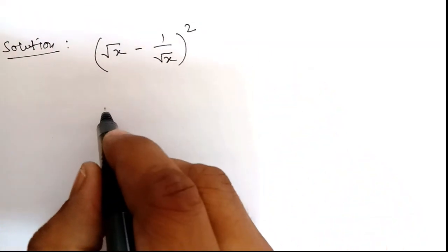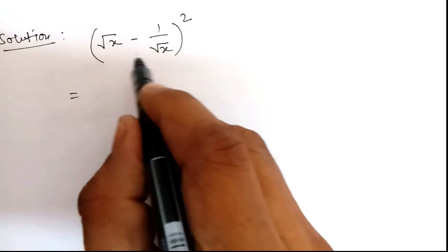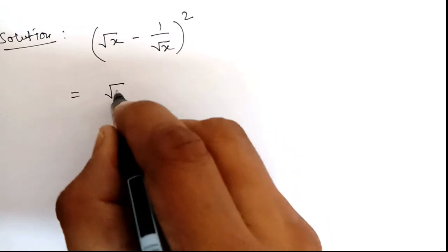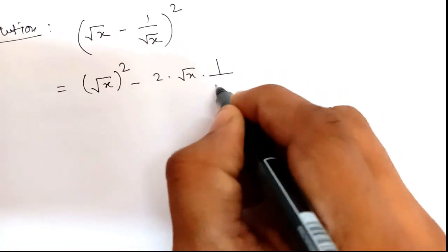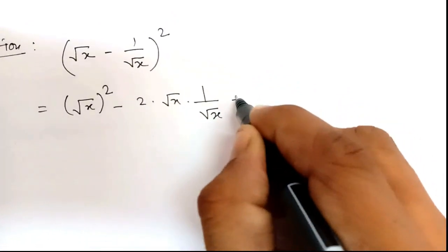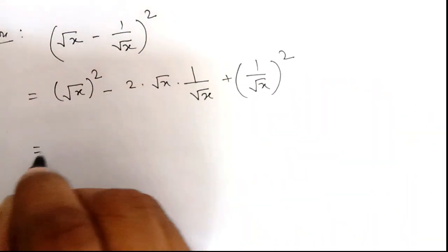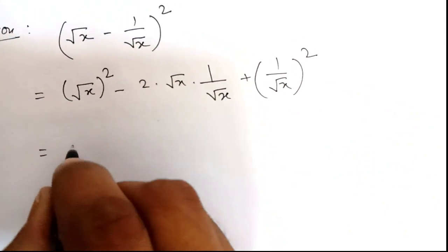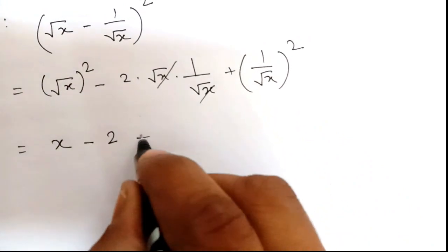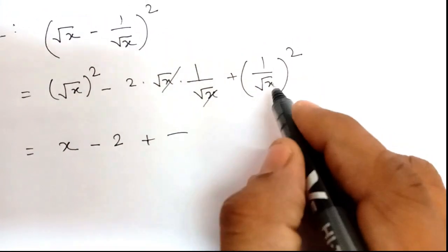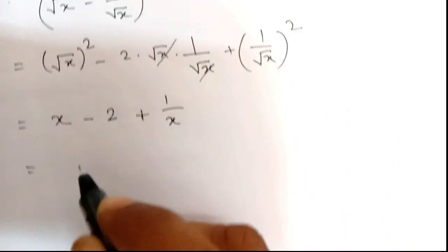So we take root over x minus 1 by root over x, whole square. We will apply the (a minus b) whole square formula. This becomes root over x squared, minus 2 into root over x into 1 divided by root over x, plus 1 by root over x whole squared. So root over x squared will be x, the middle terms cancel to give minus 2, plus 1 divided by root over x squared, which is 1 by x.